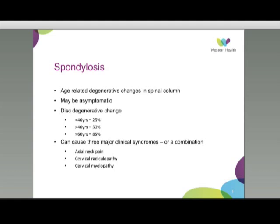Degenerative change in the cervical spine can cause three major clinical syndromes, and can cause a combination of these: axial neck pain, cervical radiculopathy with radicular pain mainly into the arms, and cervical myelopathy, which causes long tract signs due to compression of the spinal cord.